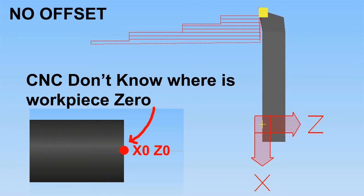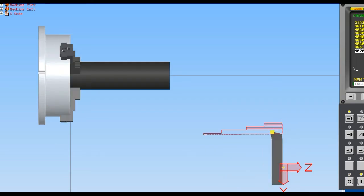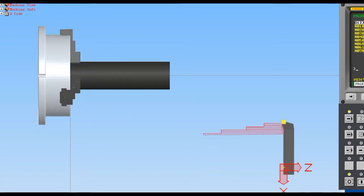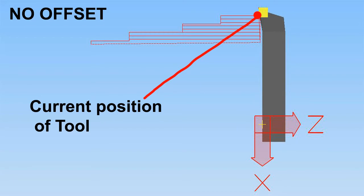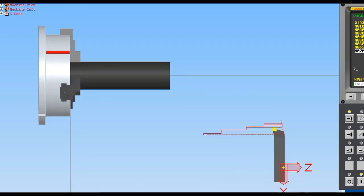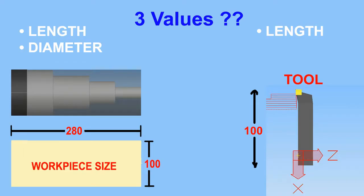When we make our program, we write every code with respect to Part Zero — that is the center of the outer face of our raw material, where we want our X0 and Z0. But CNC doesn't know where exactly this Part Zero is, so it will take the current position of the tool as Part Zero and start the program, as you have seen in the video.